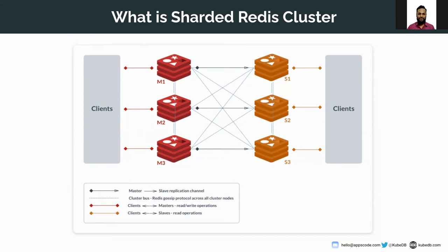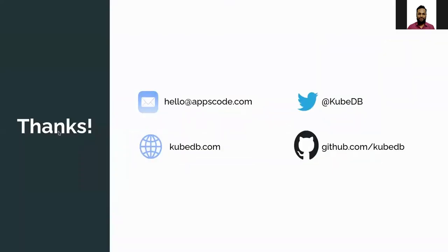When a master node fails or cannot accept connections due to network partitions, the slave will take over as master. When the original master wants to rejoin, it will reconfigure itself as a replica and join the new master. In the next video, we will look at the challenges of deploying a Redis cluster in Kubernetes and what KubeDB is offering.